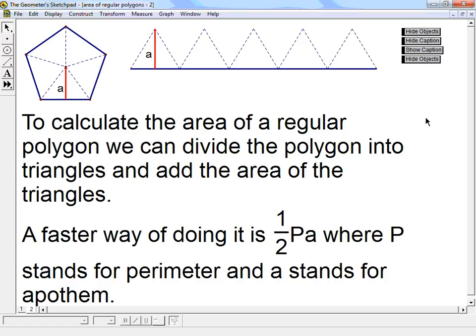To calculate the area of a regular polygon we can divide the polygon into triangles and add the area of the triangles. That's one way we can do it. But a faster way of doing it is one-half times P times A, where P stands for perimeter and A stands for apothem. So that way I take care of all the triangles at once.